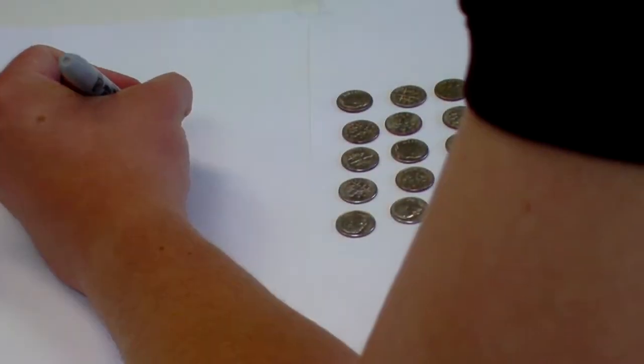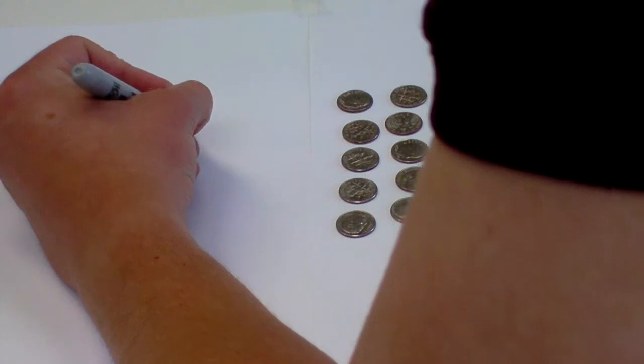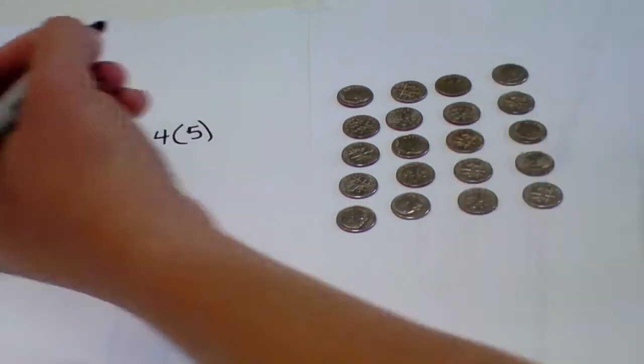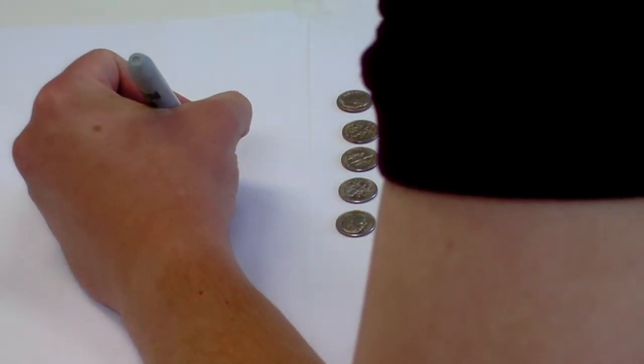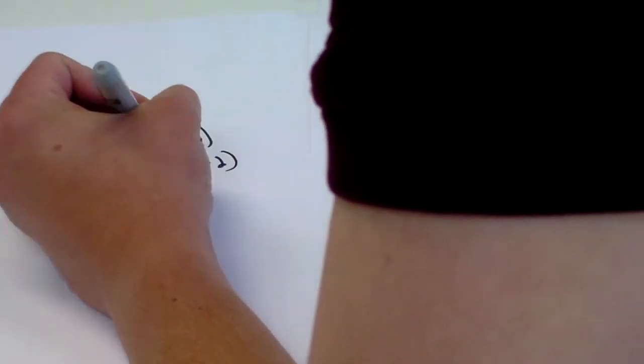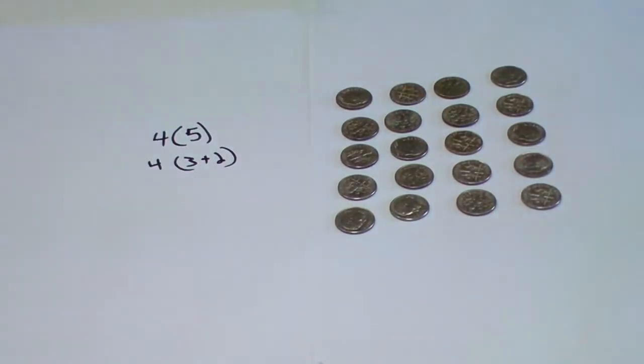So what I have is 4 times 5. Of course, 5 can be rewritten as 3 plus 2, right? So you could say I have 4 times 3 plus 2.